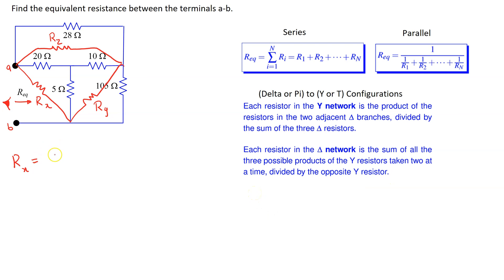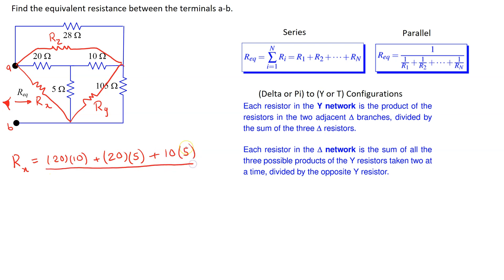So in the numerator, we have 20 times 10 plus 20 times 5 plus 10 times 5. And in the denominator, we have the opposite Y resistor. The resistor opposite to Rx is the 10 ohm, so this is in the denominator. This simplifies to 350 over 10, which is equal to 35 ohms.